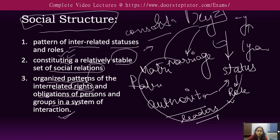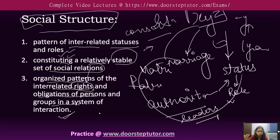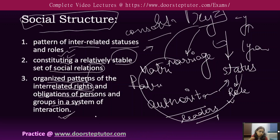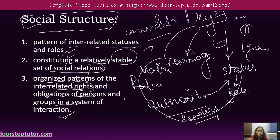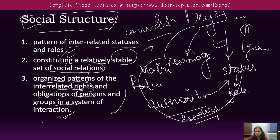Whatever people and groups are there, they will definitely have some obligation to follow the leader we talked about, and they are also going to have some rights — to claim their property, to claim whatever rights they have been given as per the leader of that society. That is the whole social structure of the society.